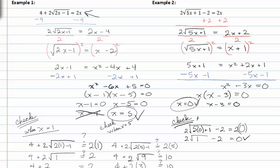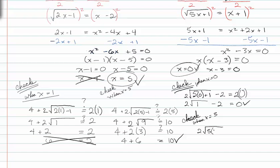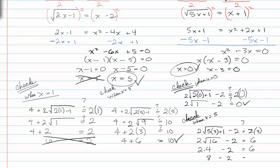Now let's check for when x is equal to three. Two times the square root of five times three plus one minus two equals two times three — we need to see if that's true. So we get two times the square root of sixteen minus two equals six. Two times four, because the square root of sixteen is four, minus two equals six. Eight minus two does indeed equal six, so that one works too. Both answers are true.